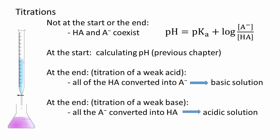At the end of the titration of a weak base, all of the weak base is converted to the weak conjugate acid. The solution will be slightly acidic and have a pH lower than 7.